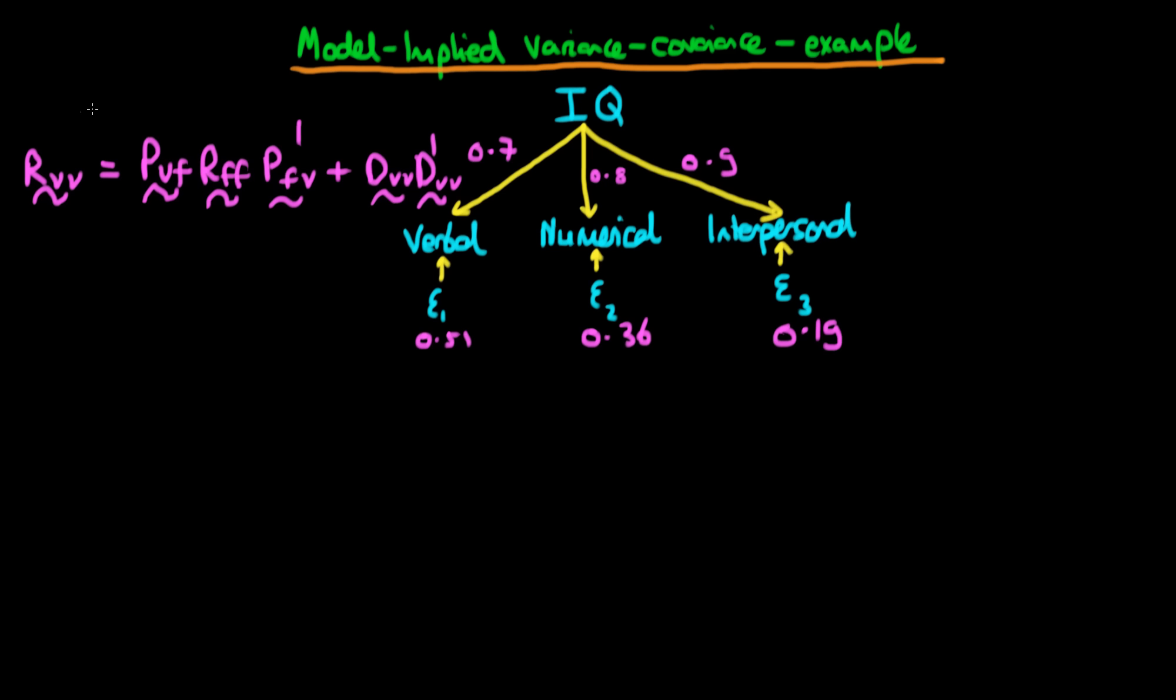And we also have the model which we wrote down in the last video, which is the covariance between the V indicator variables with one another. And we want to use this equation up here in order to help us derive the model-implied variance and covariance.